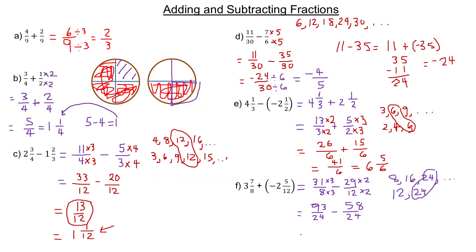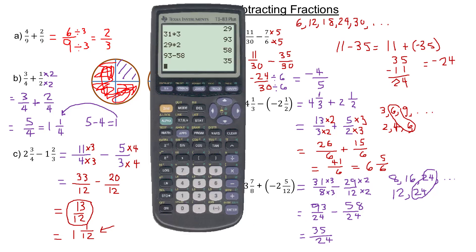It's improper because 35 is bigger than 24. If we want to figure it — 24 goes into 35 one time. If you're not too sure about that, divide it — it goes in one time with a bit left over. So it's one.